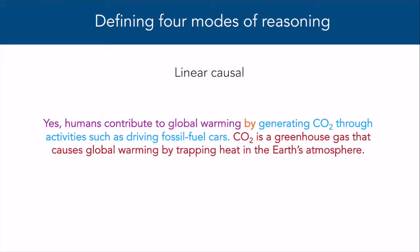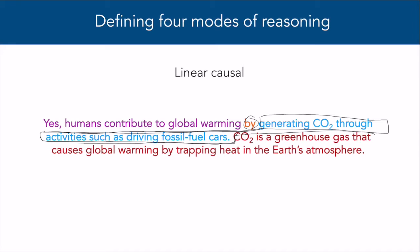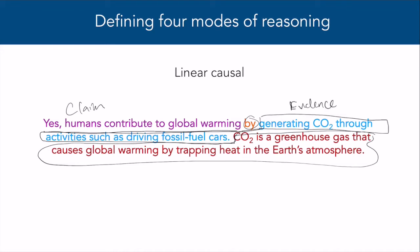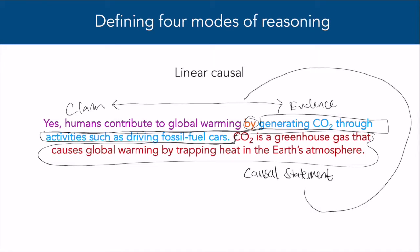The third mode is called linear causal reasoning. In linear causal reasoning, the claim and evidence are described and a link between them is established. The link is then justified by providing additional causal statements that describe why the evidence supports the claim. Example: yes, humans contribute to global warming by generating CO2 through activities such as driving fossil fuel cars. CO2 is a greenhouse gas that causes global warming by trapping heat in the Earth's atmosphere. The additional causal statement allows us to understand how and why greenhouse gases like CO2 cause global warming.